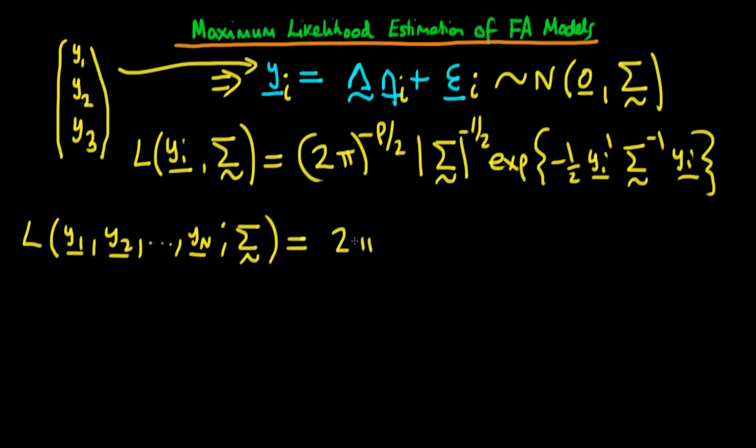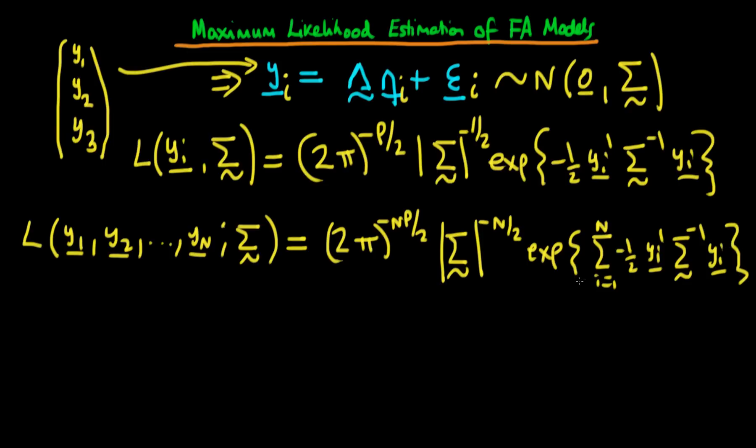So if we do that, we find that this is equal to 2π to the power minus Np over 2 times the determinant of sigma to the power minus N over 2, and then finally we just get the exponent of the sum from i equals 1 to N of minus 1 half times Y_i transposed times the inverse of sigma times Y_i.